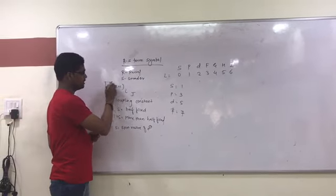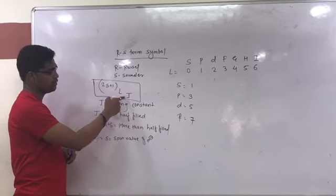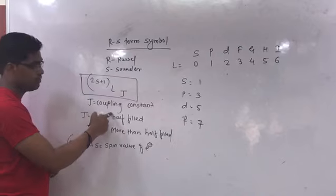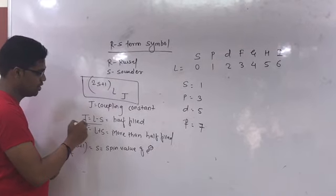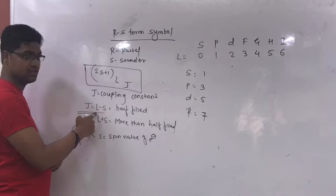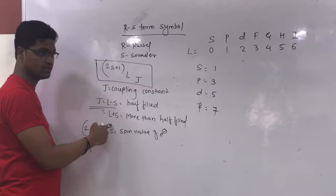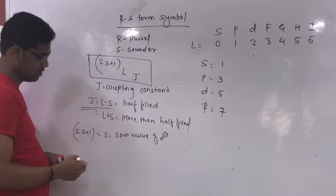This is the formula for determination of the R-S term symbol. That is 2S plus 1, L into J, where J is called the coupling constant. There are two values of J, that is L minus S and L plus S. L minus S value is when it is half-filled and L plus S is more than half-filled. Now, let's start the example.